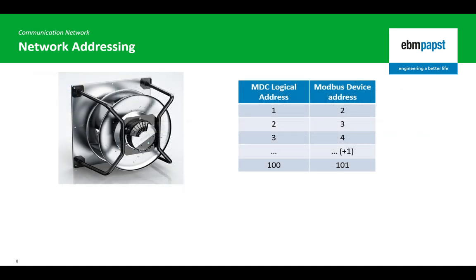The MDC controller assigns two identifiers for each fan in the array: the logical address, which can reflect the physical position of the fan in the array, and the Modbus device address, which the fan responds to when sent a command by the MDC controller.